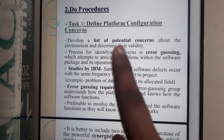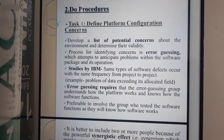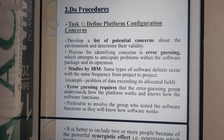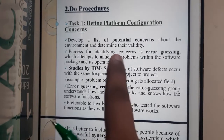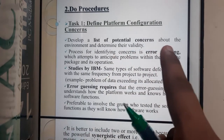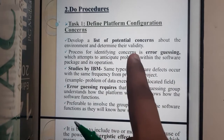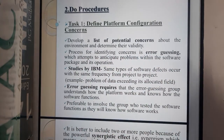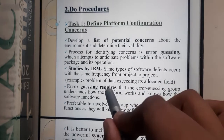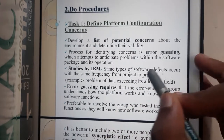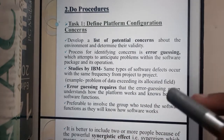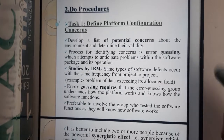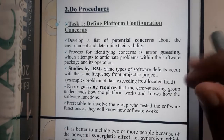The first step of the do procedure is to define platform configurations. You develop a list of potential concerns about the environments and determine their validations. If there are any errors — for example, a clickable component not present in the Mac version — you will be specifying and listing them here.